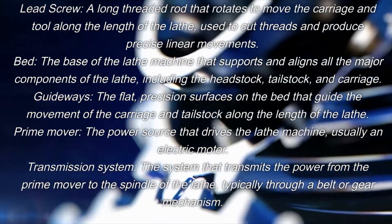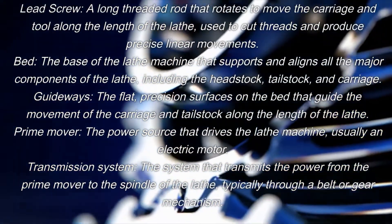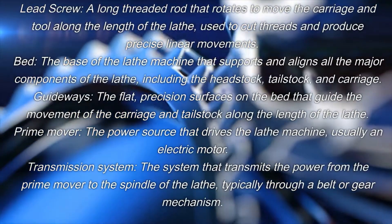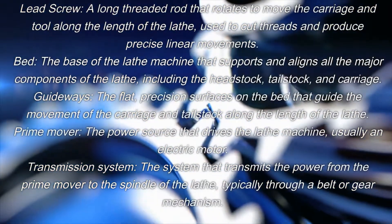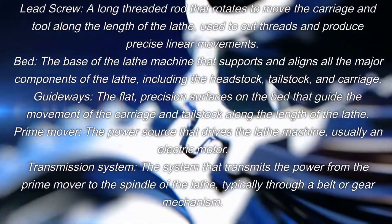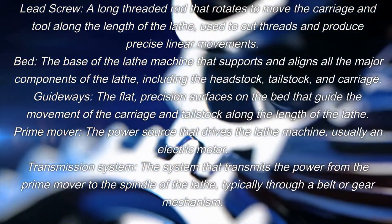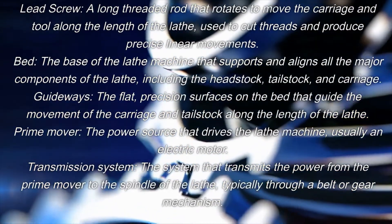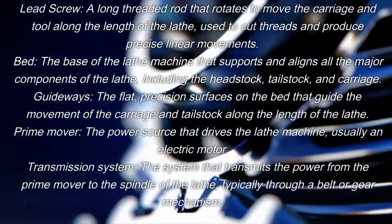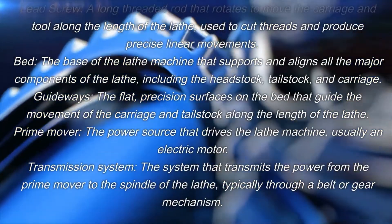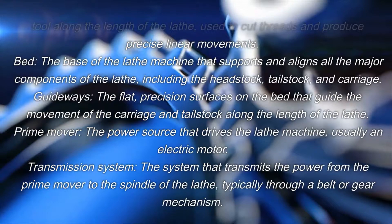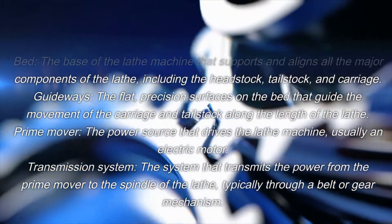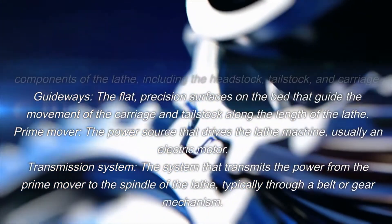Bed: the base of the lathe machine that supports and aligns all the major components, including the headstock, tailstock, and carriage. Guideways: the flat precision surfaces on the bed that guide the movement of the carriage and tailstock along the length of the lathe. Prime mover: the power source that drives the lathe machine, usually an electric motor.